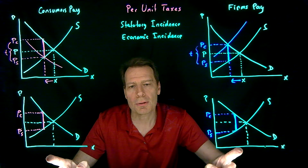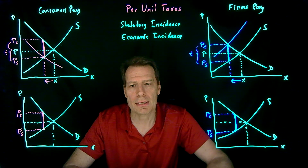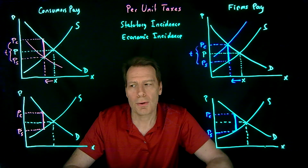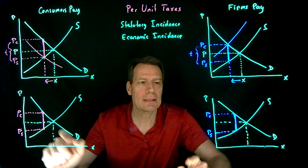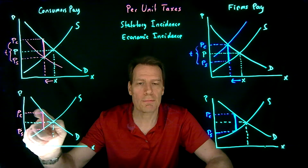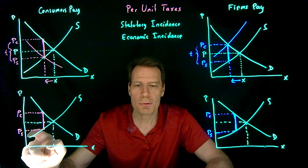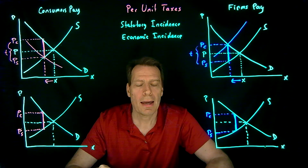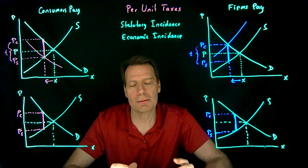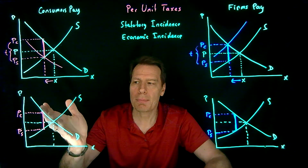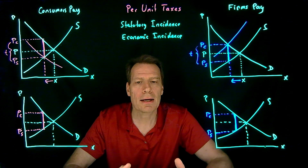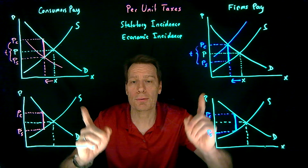What we see is that the picture looks exactly identical in both cases. The economic incidence — who pays for the tax — is exactly the same in both cases. Consumers pay for a portion of the tax, firms pay for a portion of the tax, and who pays which portion depends on the relative elasticities of demand and supply. It's not going to depend on how the law is written.